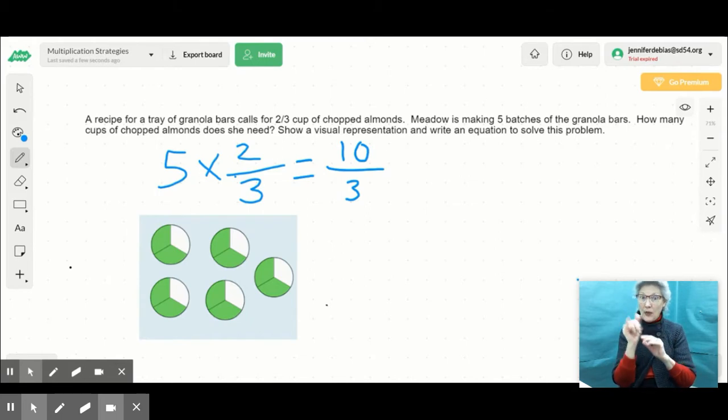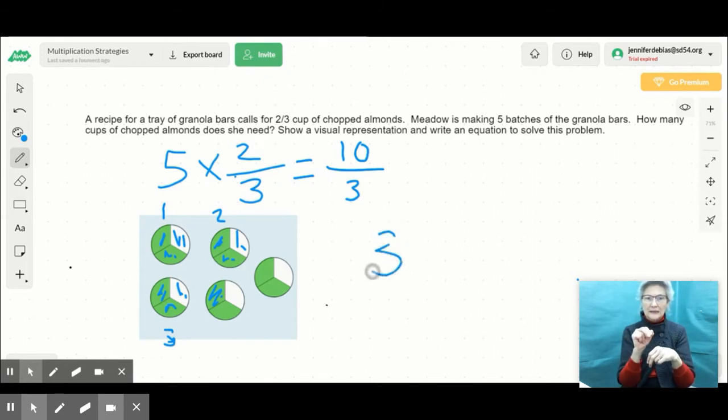I know that 3/3 equals one whole, right? So 10/3. So this is 1, 2, 3. I'm going to keep track. That's one whole over here. 4, 5, 6. That's 2 wholes. 7, 8, 9. That's 3 wholes. And then I have 10, because I have 10 one-third pieces.